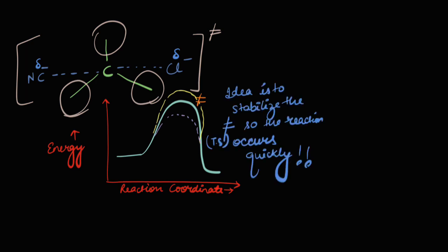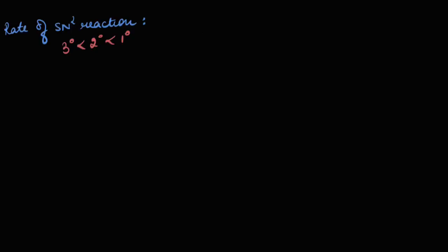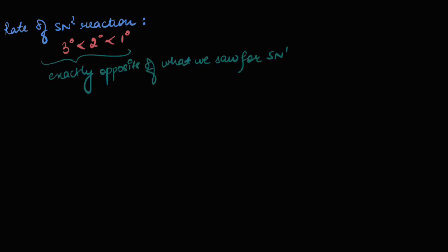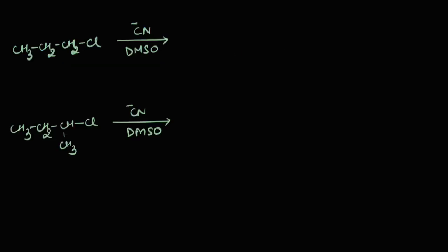The basic idea is to stabilize the transition state so that the reaction occurs quickly. More bulky groups attached on the carbon being attacked means less stable transition state and lower rate. So when comparing rates of 1°, 2°, and 3° substrates towards an SN2 reaction, the rate of a 1° substrate is faster than that of a 2°, which is faster than that of a 3°. This is exactly opposite of what we saw for the SN1 reaction. Coming back to our question: the first substrate (1°) would react faster via SN2.